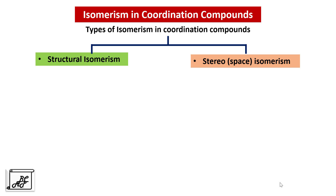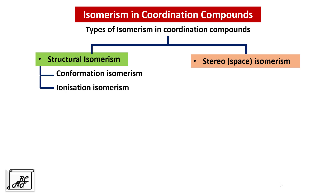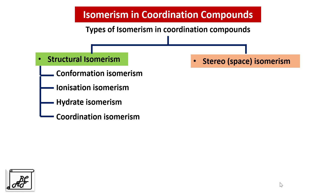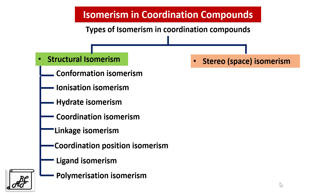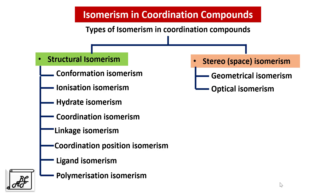In Structural Isomerism there are various types: first is Conformational Isomerism, second is Ionization Isomerism, third is Hydrate Isomerism, fourth is Coordination Isomerism, fifth is Linkage Isomerism, sixth is Coordination Position Isomerism, seventh is Ligand Isomerism, and eighth is Polymerization Isomerism. In Stereo Isomerism, the first is Geometrical Isomerism and second is Optical Isomerism. In this video we will study Structural Isomerism and in the next video we will study Stereo Isomerism.